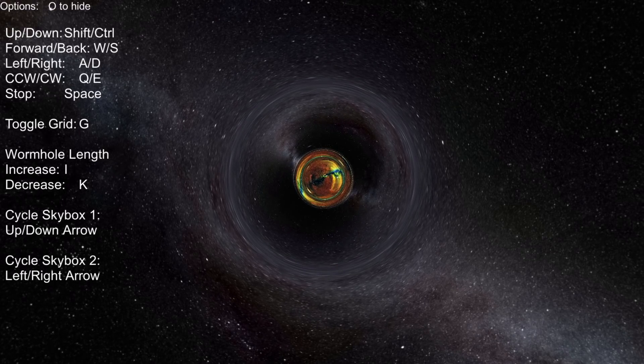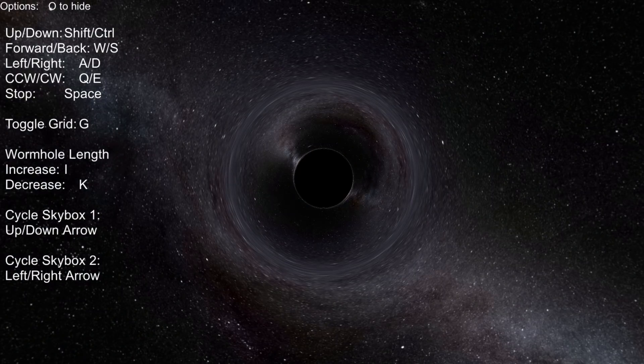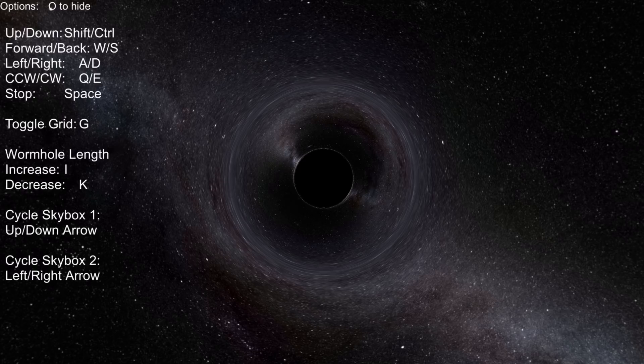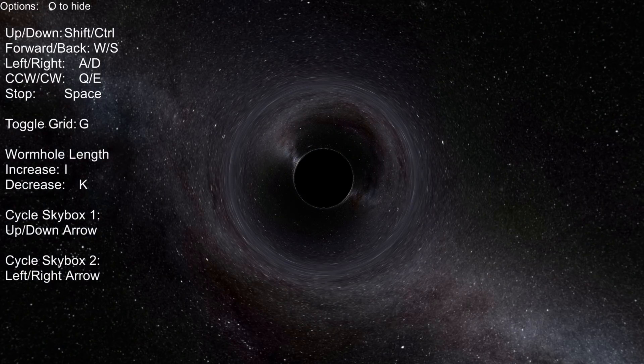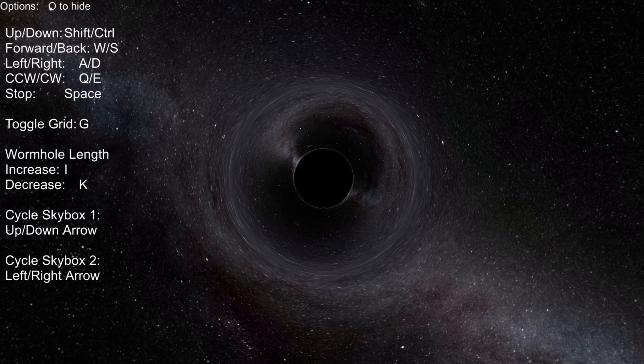Now I'm also going to change this to be a black hole. We'll get to explaining the features of the wormhole once we understand the features of a black hole. To change the skyboxes, I use the left and right arrow keys for skybox number two and up and down arrow keys for skybox number one. We're currently on the number one side.